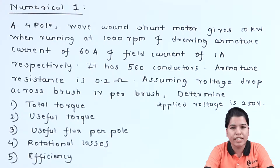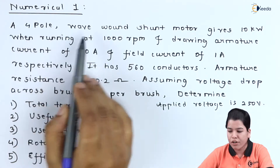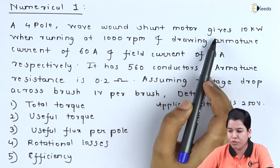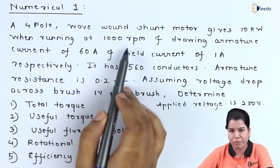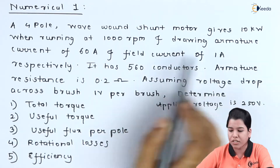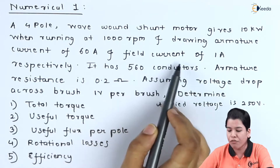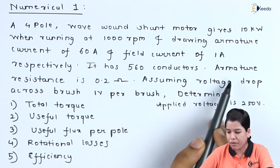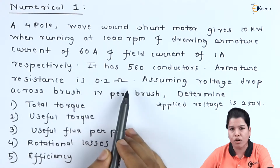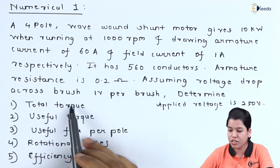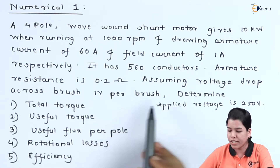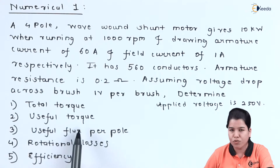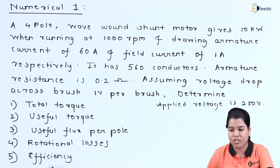The numerical one is as follows. A 4 pole wave wound shunt motor gives 10 kW when running at 1000 rpm and drawing armature current of 60 ampere and field current of 1 ampere respectively. It has 560 conductors, armature resistance is 0.2 ohm. Assuming voltage drop across each brush is 1 volt per brush, determine total torque, useful torque, useful flux per pole, rotational losses and efficiency. The applied voltage is 250 volts.